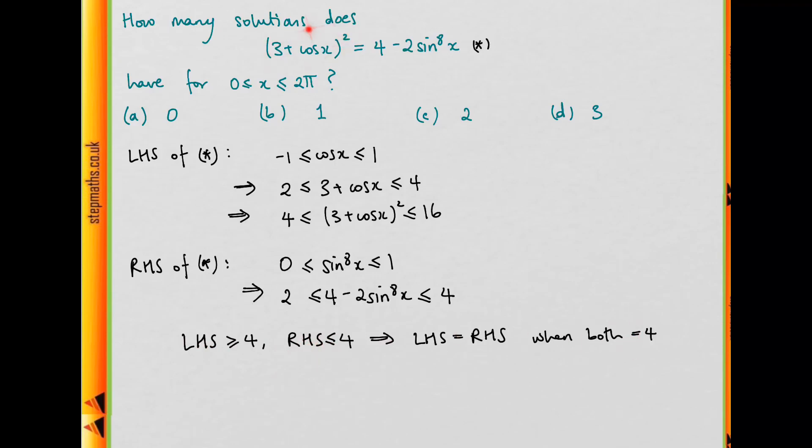When is the left-hand side equal to 4? Well, 4 is its lower bound, so we need this to be as small as possible. That's going to happen when cos x equals -1, and in this range between 0 and 2π, that's when x equals π.